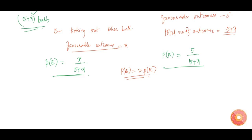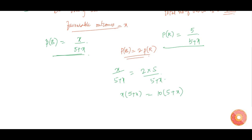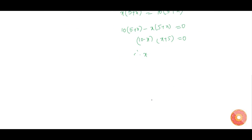P(B) equals x divided by (5 plus x), which equals 2 times 5 divided by (5 plus x). So x times (5 plus x) equals 10 times (5 plus x). Rearranging: 10 times (5 plus x) minus x times (5 plus x) equals 0, which gives (10 minus x) times (x plus 5) equals 0. Therefore x equals 10 or x equals minus 5.